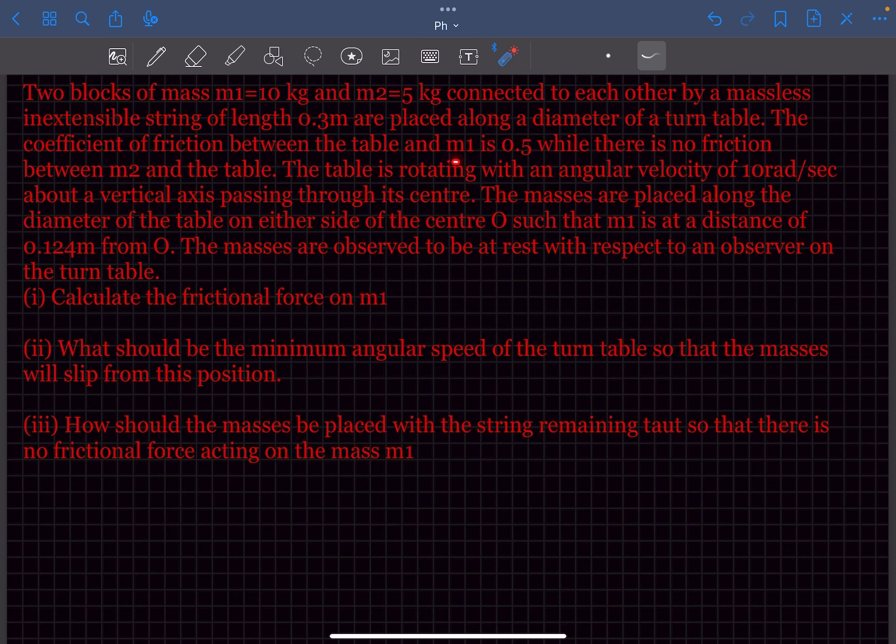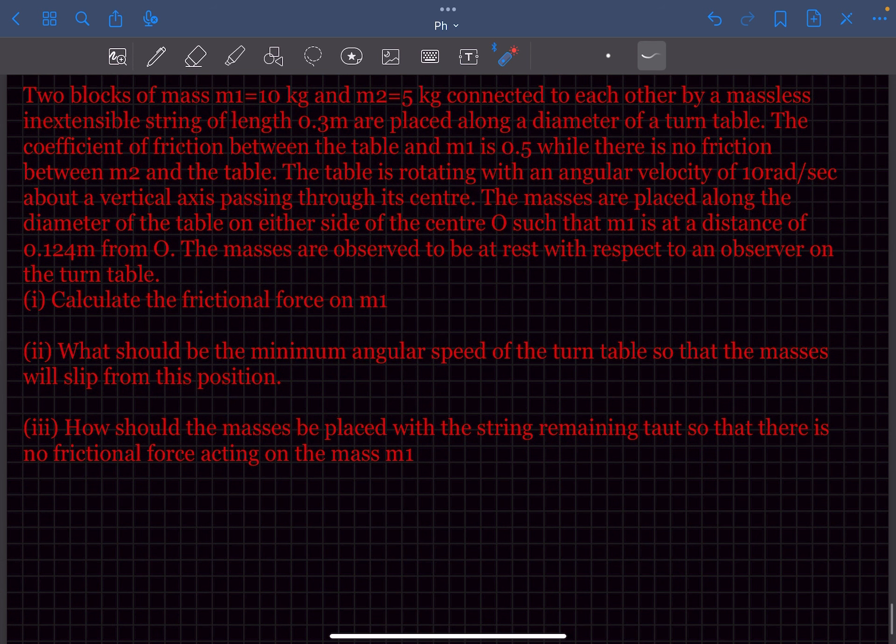The coefficient of friction between the table and mass m1 is 0.5 while there is no friction between mass m2 and the table. The table is rotating with an angular velocity of 10 radians per second about a vertical axis passing through its center. The masses are placed along the diameter of the table on either side of the center O such that m1 is at a distance of 0.124 meters from O. The masses are observed to be at rest with respect to an observer on the turntable.